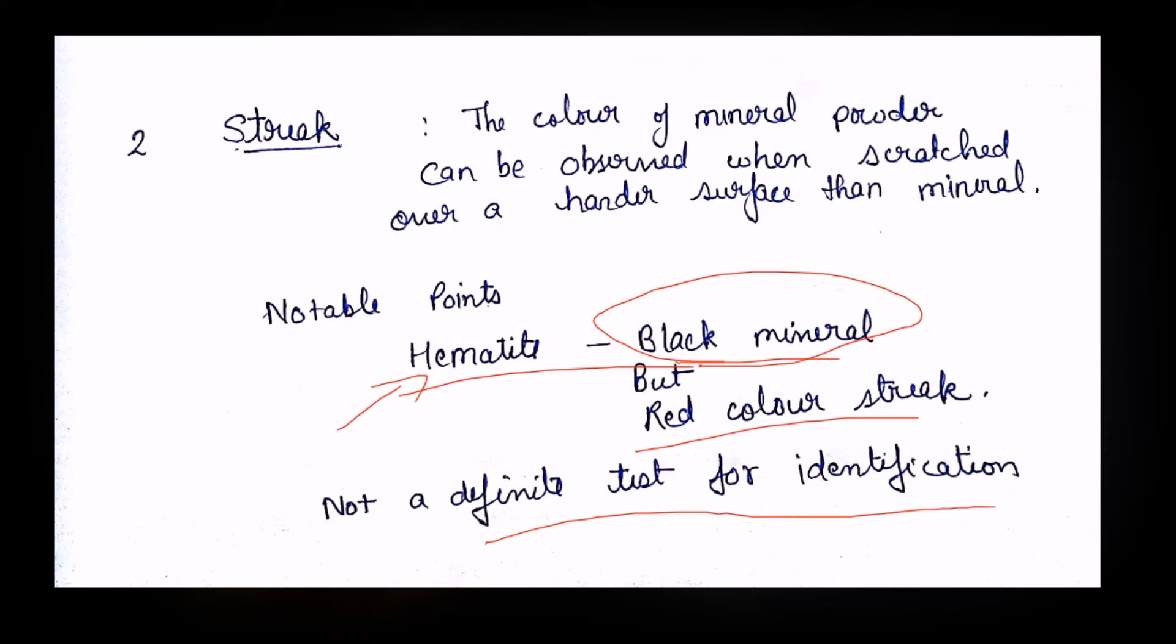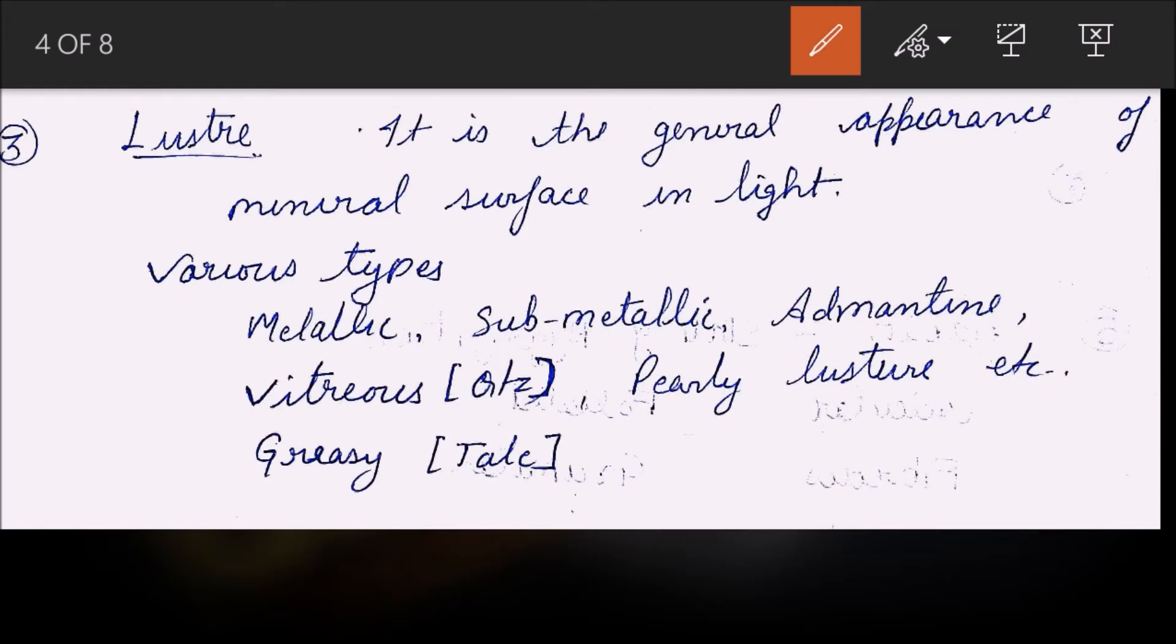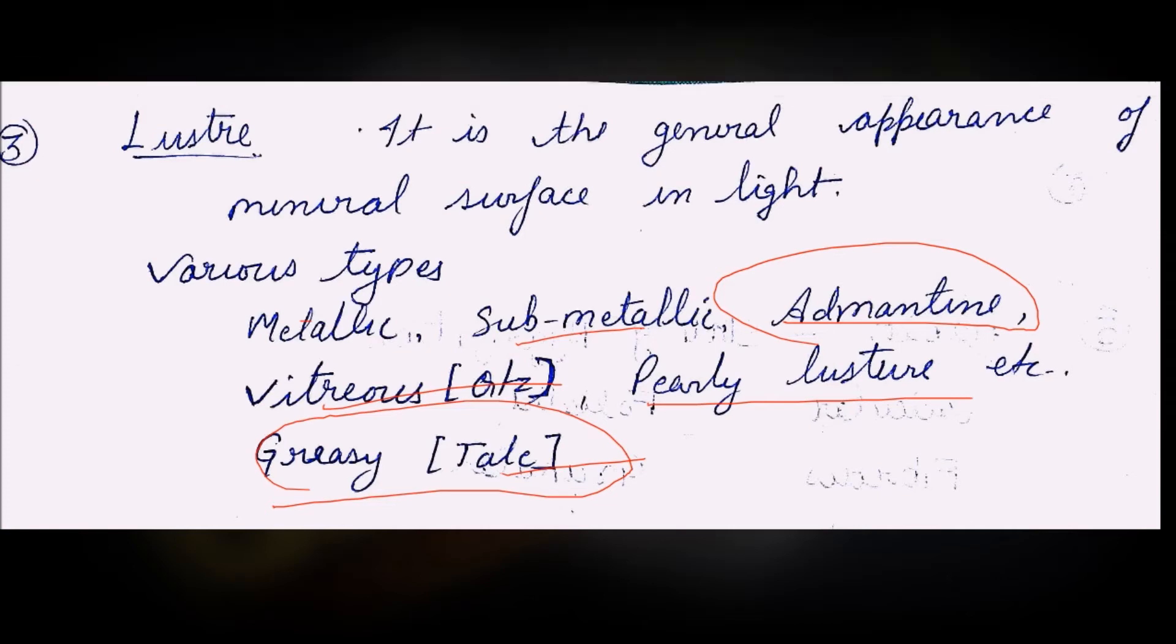The third physical property of minerals is luster. Luster is the general appearance of the mineral surface in light. When light falls on a surface, how it appears is the luster. It can be metallic, sub-metallic, adamantine - which is the luster of diamond - then there is vitreous like quartz, pearly luster, and greasy luster. Talc is greasy - if you have touched talc you might know it has a very greasy feel, like graphite.